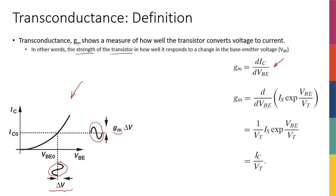Since we know the expression for IC, we can actually calculate and find the real expression for GM. If I take the derivative with respect to VBE of the exponential expression for IC, I get that GM equals IC over VT. So really, my GM is the collector current divided by the thermal voltage.